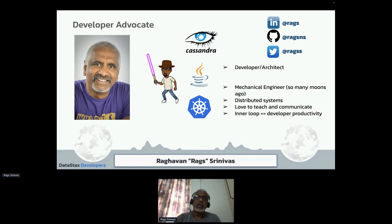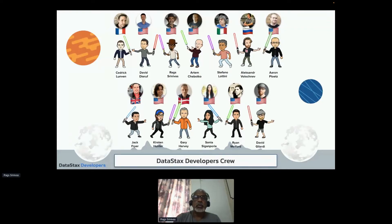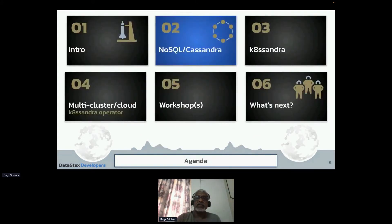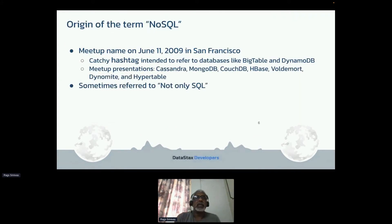I'm from the Java side of the world and do a lot of Kubernetes. One of my passions is distributed systems, and I really love to teach and communicate. We have a whole group, and I keep mentioning that we live in a golden age of developers — a lot of free resources, and I'll point to all of them in a second.